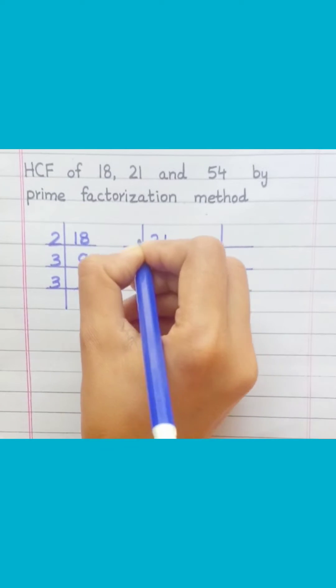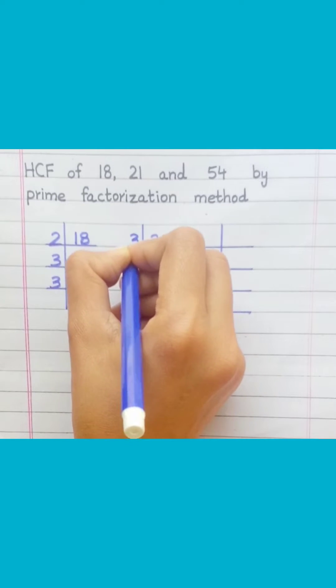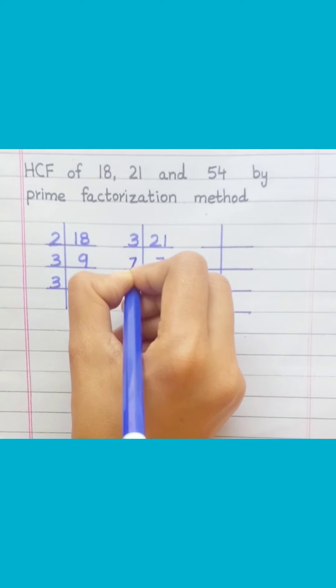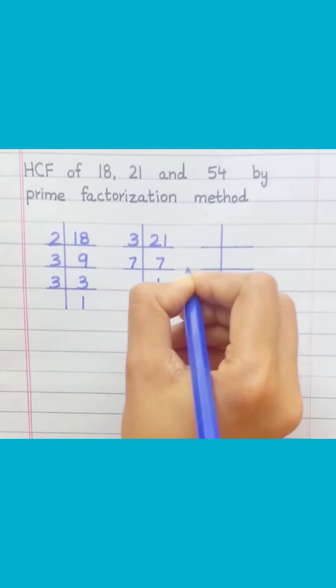21: three sevens are 21, seven ones are 7.